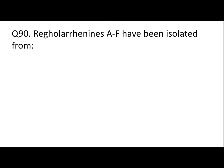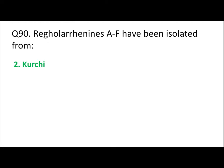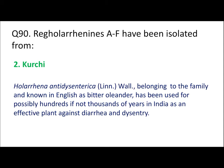Question 90: Regolarinins A to F have been isolated from Veratrum, Kurchi, Aconite, or Erica? Regolarinins have been isolated from Kurchi. The plant's scientific name is Holarrhena antidysenterica, and it is known in English as bitter oleander.